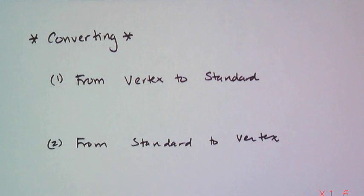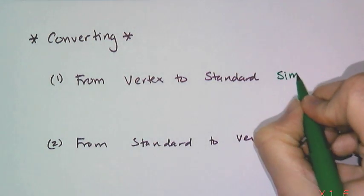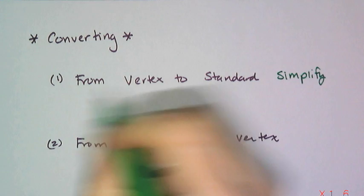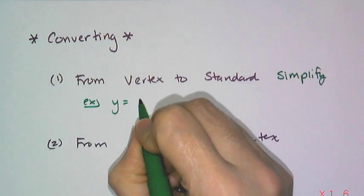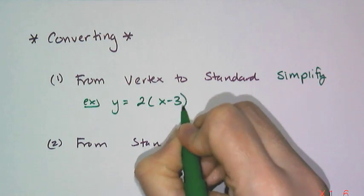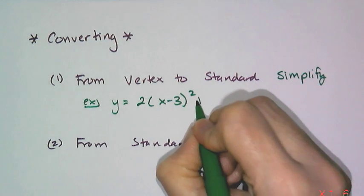Now what we really want to be able to do is easily convert between the various forms. Because standard form gives us the y-intercept, and the vertex form gives us, well, the vertex. And so if I want to convert from vertex form to standard form, all you have to do is simplify. So if I have the example, y equals 2 times x minus 3 quantity squared, plus 5...